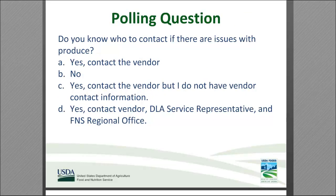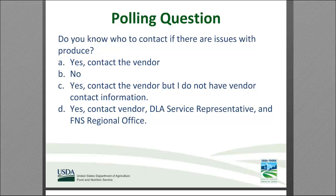Polling question: Do you know who to contact if there are issues with the produce? A: Yes, contact the vendor. B: No. C: Yes, contact the vendor, but I do not have the vendor contact information. D: Yes, contact the vendor, the DLA service representative, and the FNS regional office. The correct answer is D — contact the vendor, the DLA service representative, and the FNS regional office. If everyone follows through on that action, we will see great improvements.